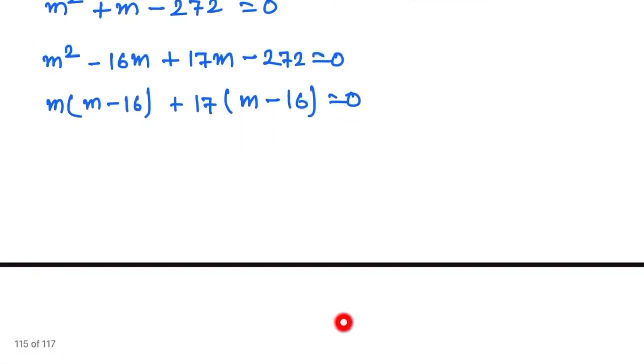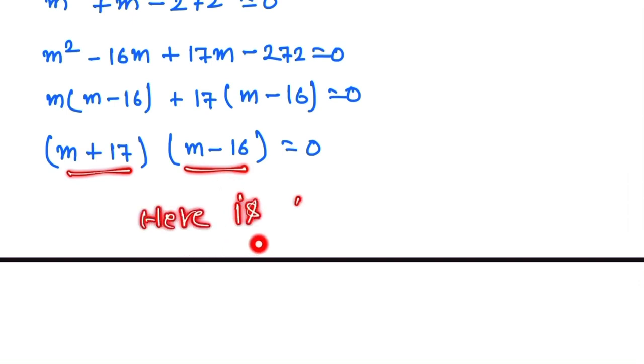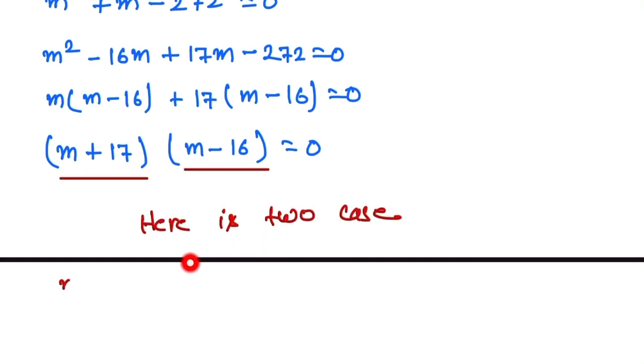So here, (m + 17)(m - 16) = 0. We find two cases: m + 17 = 0 and m - 16 = 0. So m = -17 and m = 16.